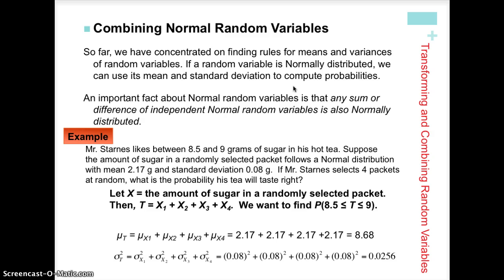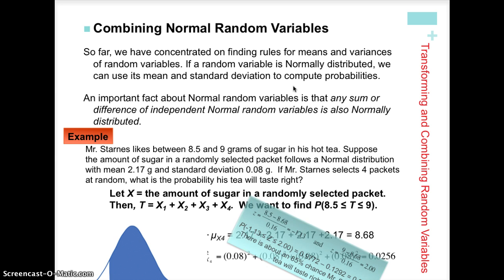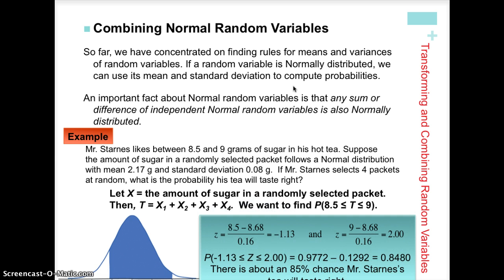For standard deviation, we add the variances — remember, variances are standard deviations squared, so we square 0.08, add all four together to get the variance of T, then take the square root for the standard deviation. We draw the distribution with the new mean and standard deviation, then calculate the probability using Table A or our calculator with z-scores to find areas under the density curve. The result is an 85% chance that Mr. Starnes' tea will taste the way he wants it.